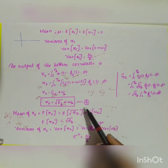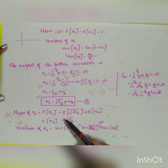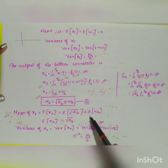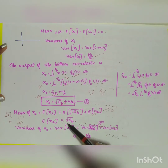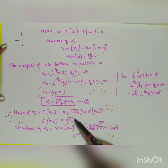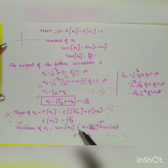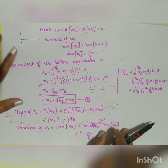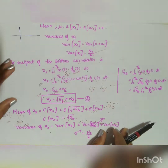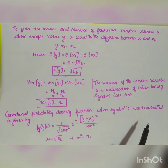The mean of x2 is E[x2] = √Eb (the noise mean is 0), and the variance of x2 is N₀/2. We have now found x1 and x2 from the correlator outputs.